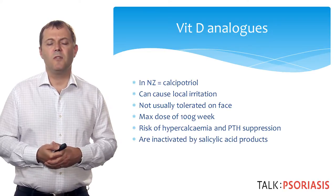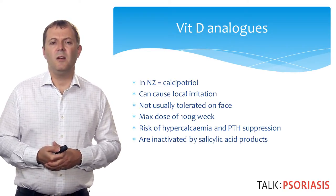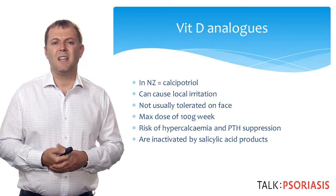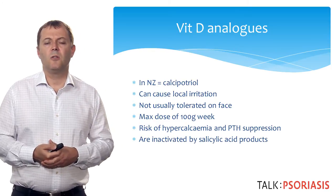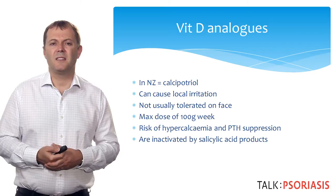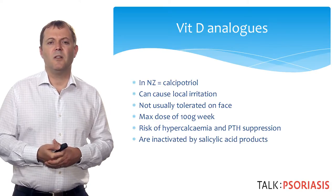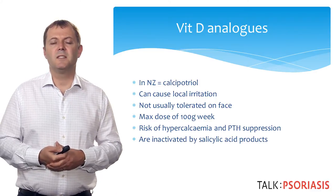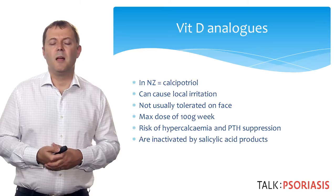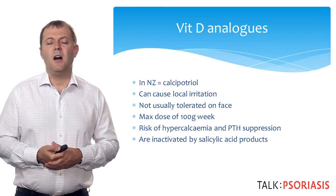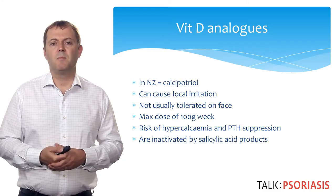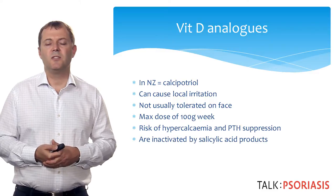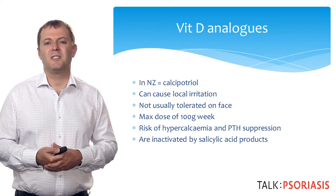Vitamin D analogue can be very useful in treating psoriasis. The only one available in New Zealand is calcipotriol. It's usually applied once or twice daily but can cause local irritation, so it's not usually tolerated well on the face. There is a maximum amount that can be prescribed — around 100 grams per week — because patients who use more are at risk of hypercalcemia and decreased parathyroid hormone. Vitamin D analogues are also inactivated by certain topical preparations such as salicylic acid.